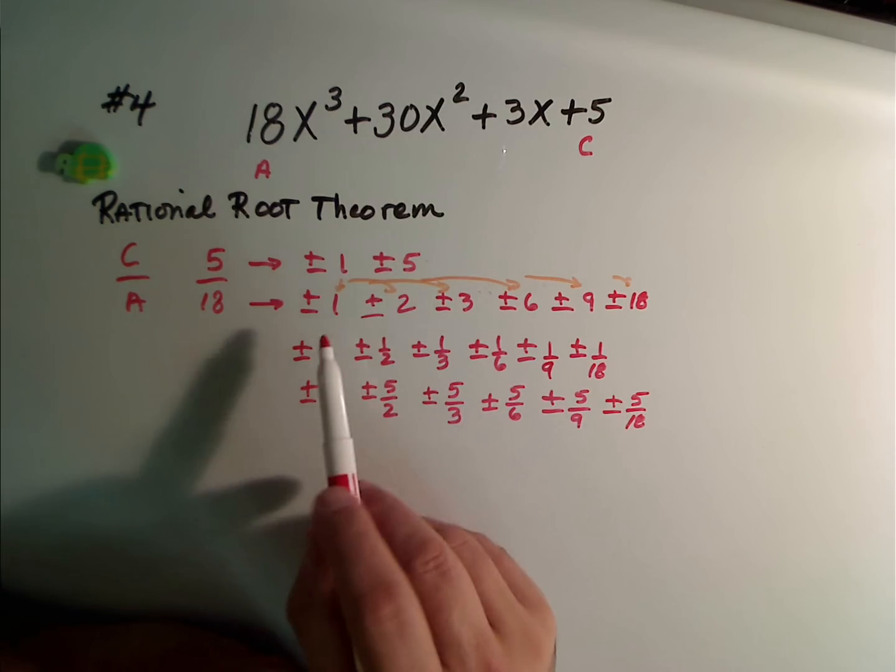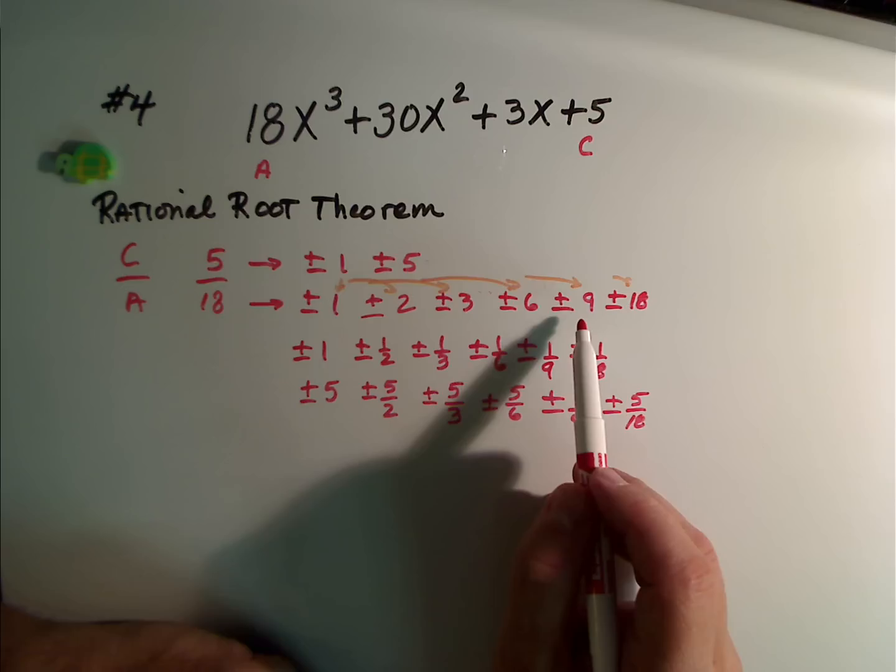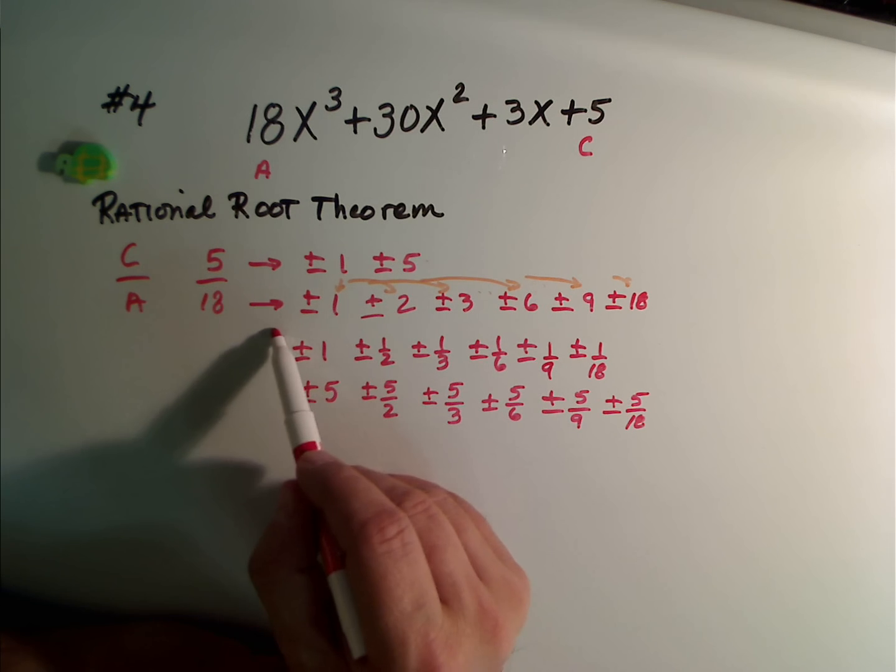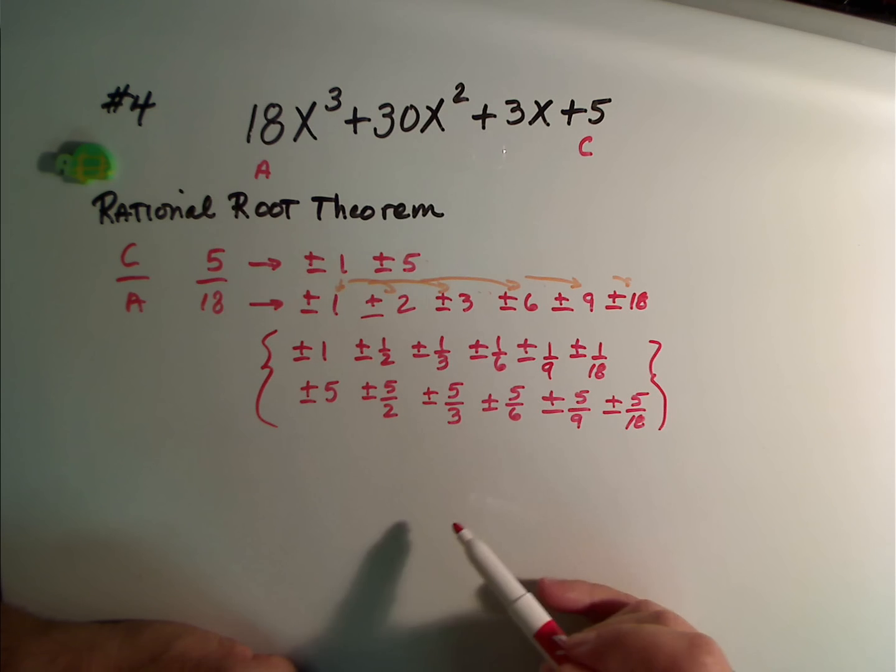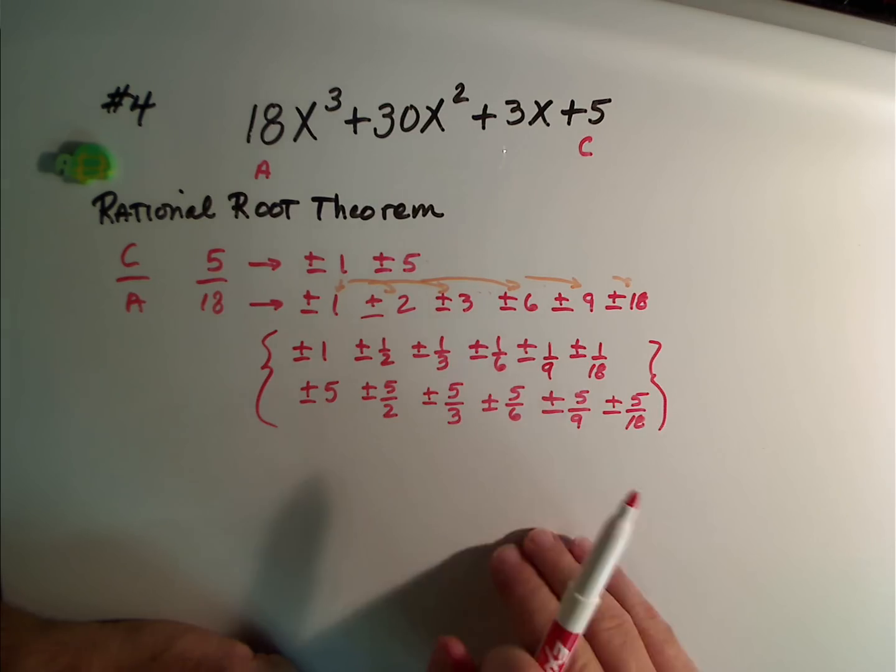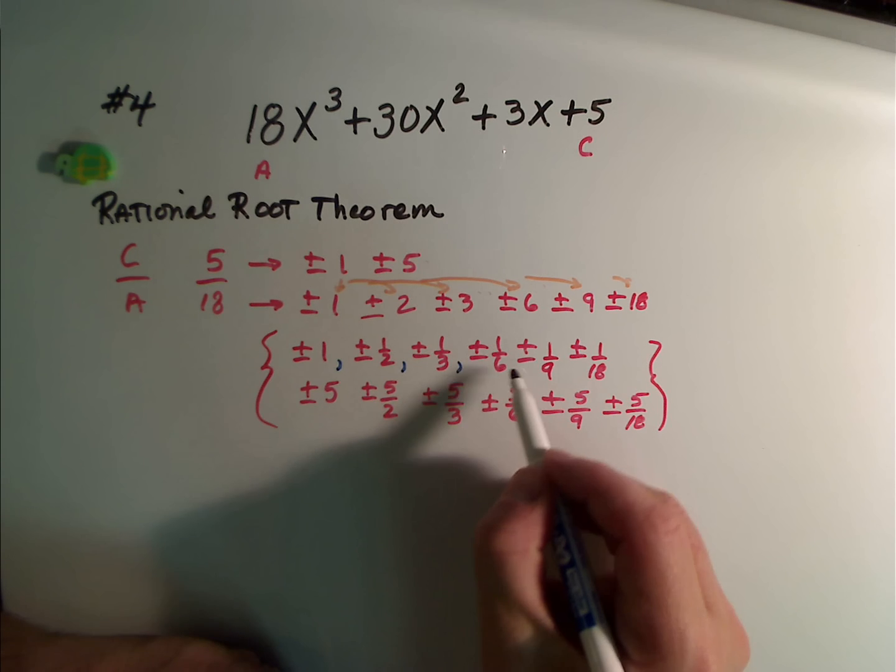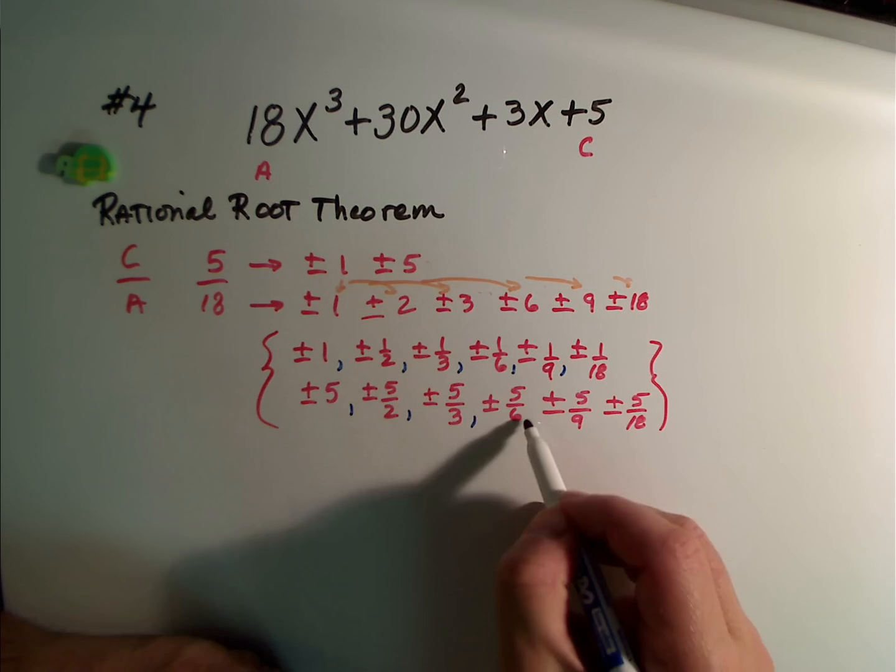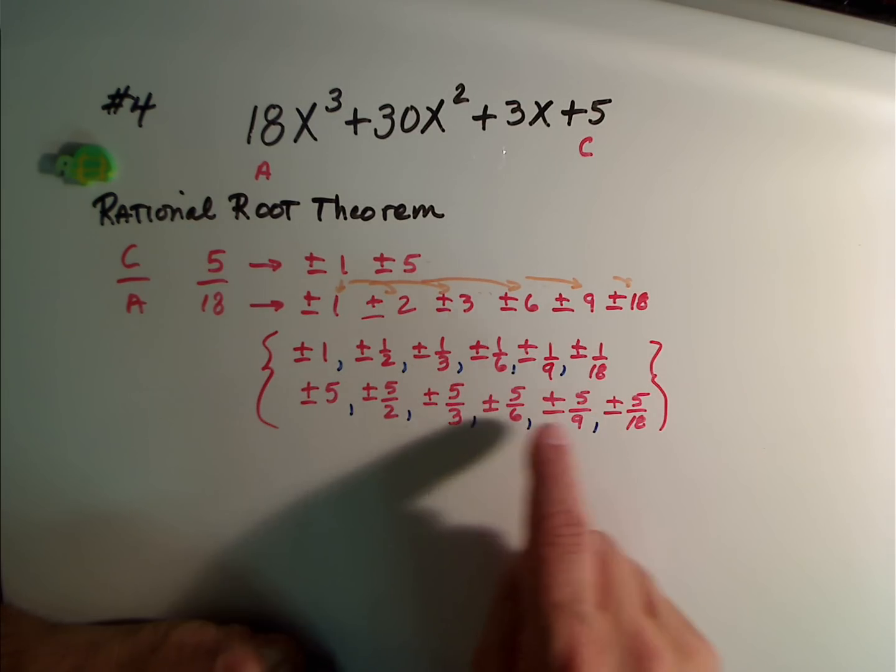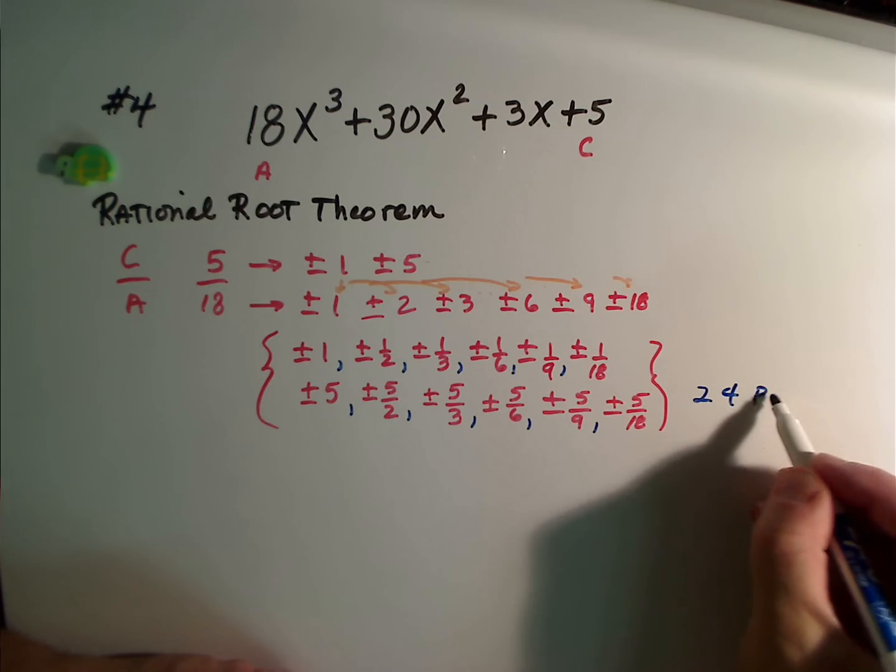So verify we got 1 times 18, 2 times 9, 3 times 6, 6 times 3, 9 times 2, and 18. So we're going to take the factors of the top and the bottom. We end up with this entire set of possible rational roots. Take away any redundancy, and I don't think we have any. I think that's all pretty good. Remember, this is a big number set, a whole lot of possible rational roots. 1, 2, 3, 4, 5, 6, 7, 8, 9, 10, 11, 12. That means plus or minus. This means 24 is possible.